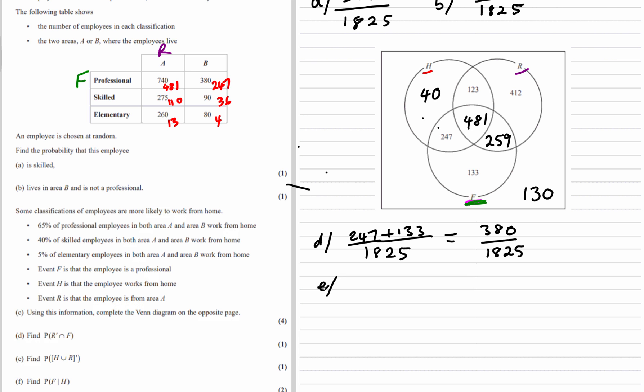The probability that it's not in the union of H and R. So the union of H and R is all of this, everything in either H or R. So what's not in that? The 133 and the 130, which is 263 over 1,825.